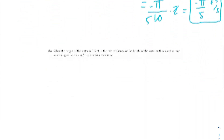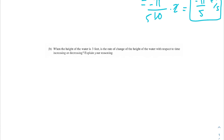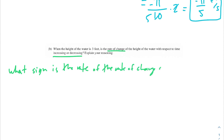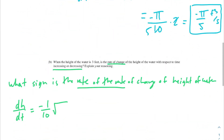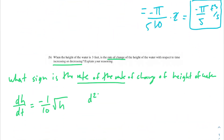Moving on to part b: when the height of water is 3 feet, is the rate of change of the height of water with respect to time increasing or decreasing? Anytime you see 'is the rate of change increasing or decreasing,' you can translate that to asking what sign the rate of the rate of change of height has. A rate of a rate means we're going to take the derivative of our rate of change — in other words, the second derivative.